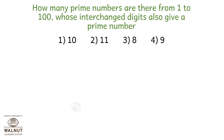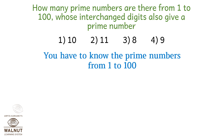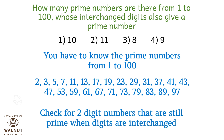How many prime numbers are there from 1 to 100 whose interchanged digits also give a prime number? Check for two-digit numbers that are still prime when digits are interchanged: 11 yes, 13 and 31 yes, 17 and 71 yes, 37 and 73 yes, 79 and 97 yes. Counting these, we get 9, which is option 4.